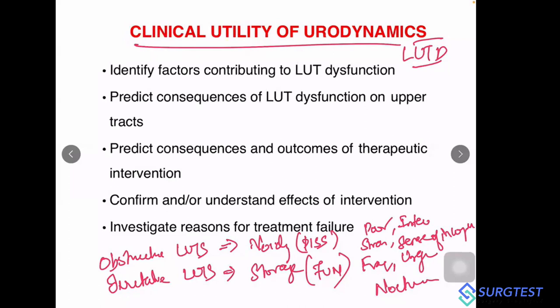The older terms were obstructive lower urinary tract symptoms and irritative lower urinary tract symptoms. These are now renamed as voiding LUTs and storage LUTs respectively. Storage LUTs can be summarized as FUN: frequency, urgency, and nocturia. Voiding LUTs, as on the IPSS — the International Prostate Symptom Score — include poor stream, intermittency, straining to void, and sense of incomplete emptying.